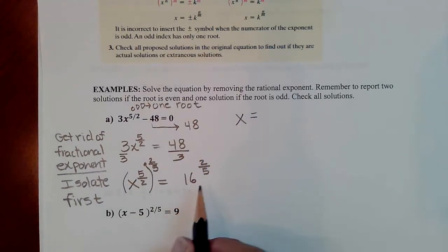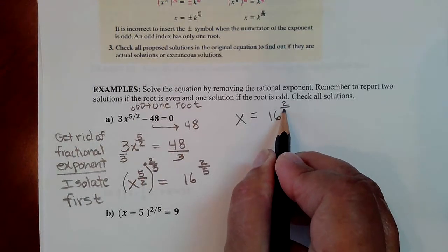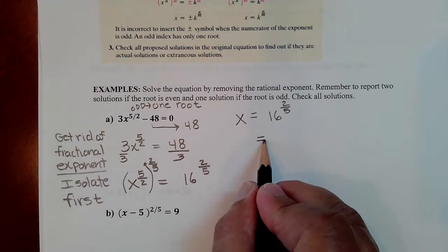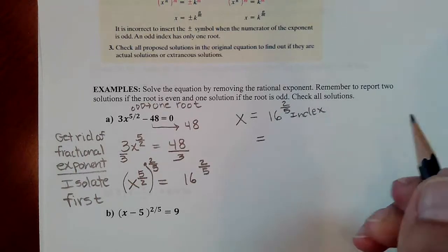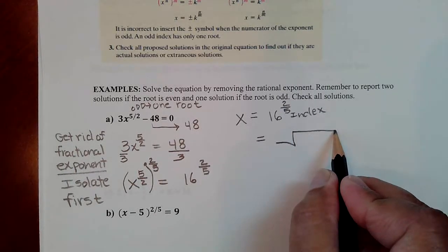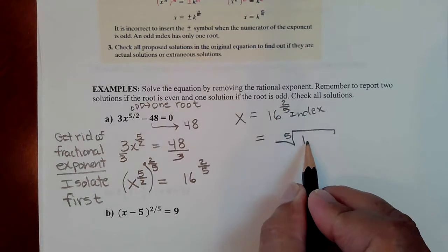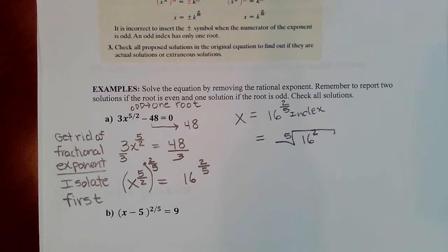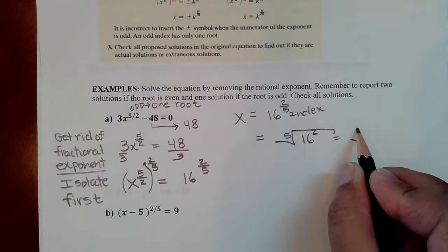On the left side, applying the power-to-a-power rule gives x to the first degree, just x. On the right side, you have 16 to the two-fifths. To simplify, write it in radical form: the bottom of the fraction is the index of the radical, so this is a fifth root, and the square is the power on the base inside. Taking the fifth root of 16 squared as a whole number gives a decimal.